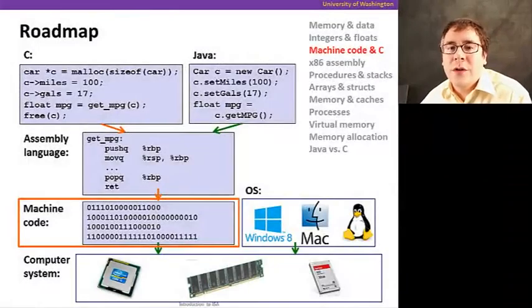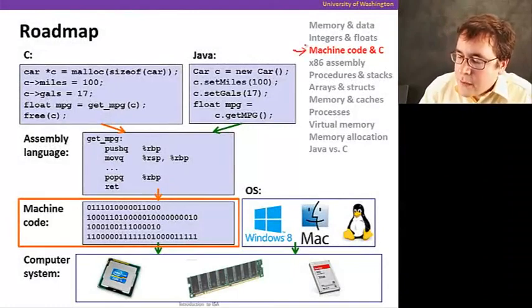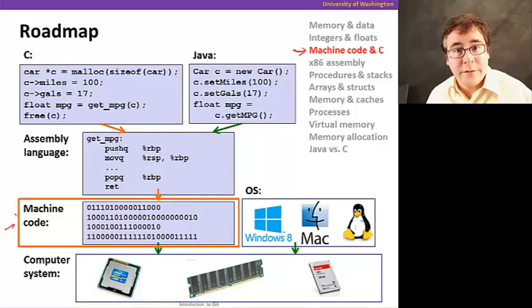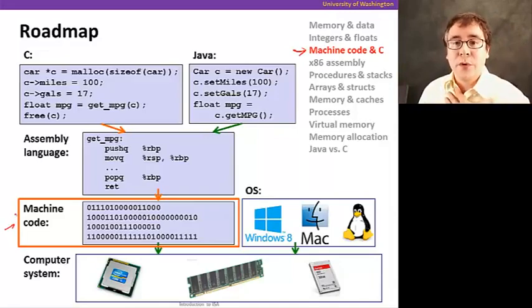So, we just heard from Gaetano how to encode integers and floats. And now, in this new section, we're going to start looking at machine code. By machine code, if you recall, we saw in the first section, these are the zeros and ones that tell the computer what to do when executing the program.